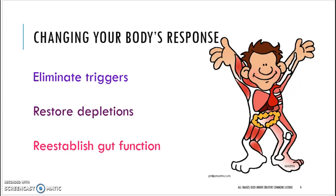The next step is to provide optimal nutrition to restore nutrient depletions. Hashimoto's leads to poor extraction of minerals and vitamins, and the lack of sufficient thyroid hormones makes nutrient extraction more difficult and less efficient. Eat a wide range of nutrient-dense food and talk with your endocrinologist and nutritionist about supplementation with B12, zinc, selenium, ferritin, thyroid hormones, and digestive enzymes.